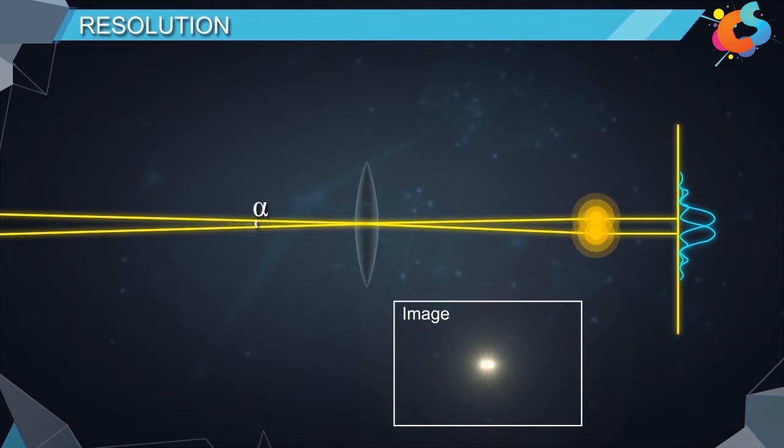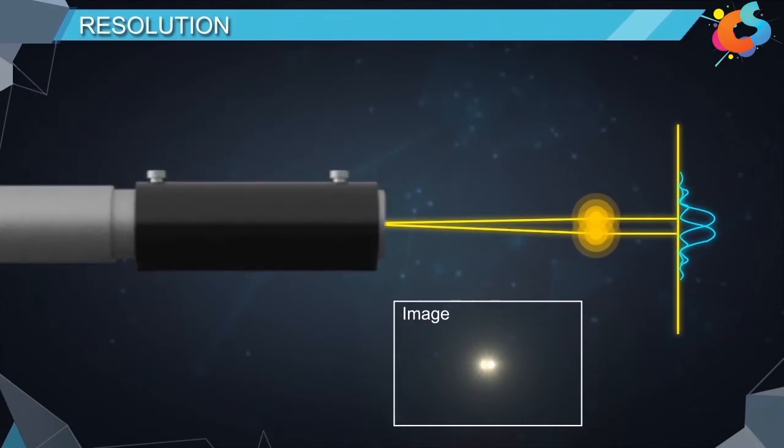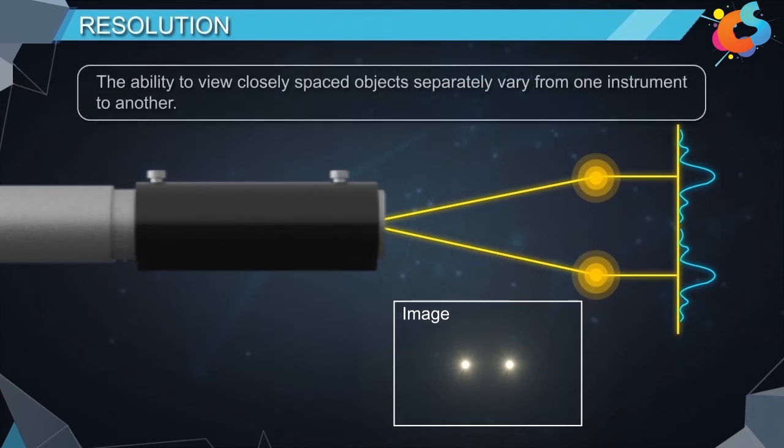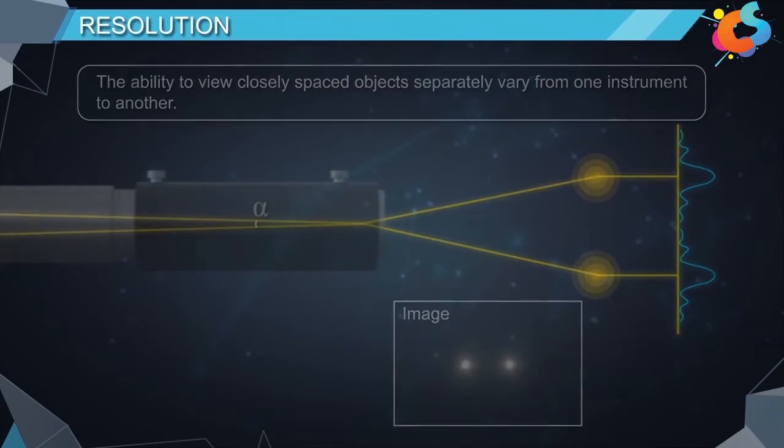Now if we replace this telescope with a more powerful one, the images would appear separate. The ability to view closely spaced objects separately varies from one instrument to the other.